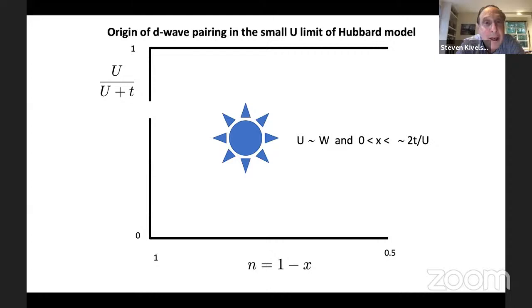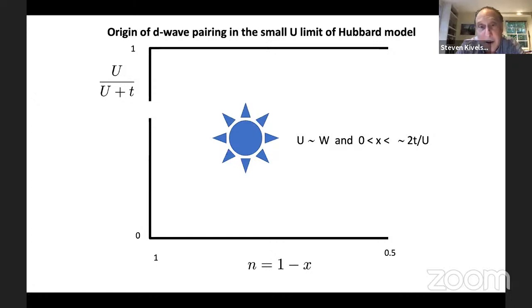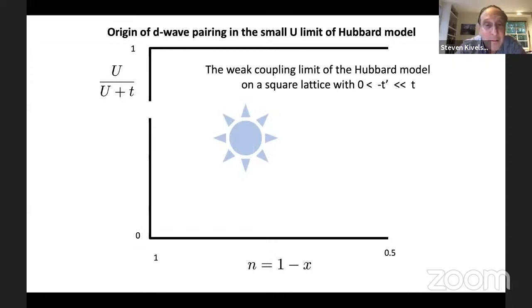Let's see how this strategy works out in the context of the Hubbard model at small U. The phase diagram of the Hubbard model has on the vertical axis the strength of interaction from zero to infinity, and on the horizontal axis the electron density per site going from one to less than one. The star in the middle — where U is on the order of the bandwidth and X is small but not too small — is what we'd really like to solve, capturing the physics of high-temperature superconductors, but it's not really solved in that region.